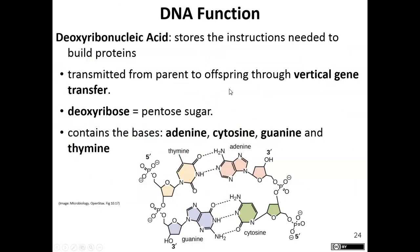DNA stores the genetic information used to carry out protein synthesis — basically the information for all the proteins that make up who we are. It is heritable, transmitted from parent to offspring. The sugar used is deoxyribose, and the four bases in DNA are adenine, cytosine, guanine, and thymine.